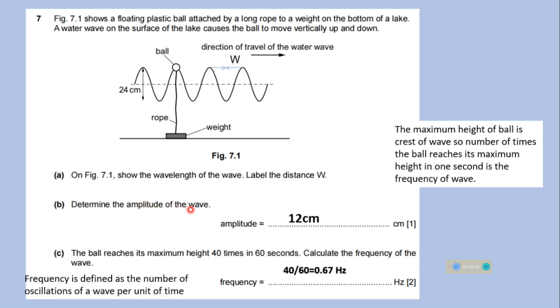Determine the amplitude of the wave. We know that amplitude is the maximum displacement from its mean position to extreme position. So the distance from its mean position, the mean position is shown by the dash line to the extreme position is 12 cm here.